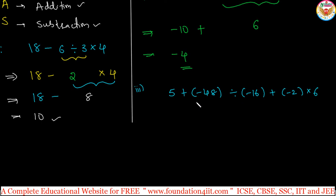Division is in this part, minus 48 divided by minus 16. Minus divided by minus is plus, 48 divided by 16 is 3. Now this is 5 plus, this side is again same, minus 2 into 6 did not change.